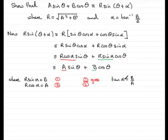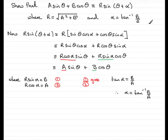To get α, I need to take the inverse tan of both sides, so α equals the inverse tan of b divided by a. And that was one of the results I wanted to show you.